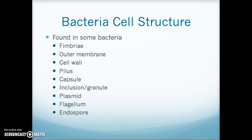In some bacteria you may find other appendages or parts, but know that they're not found in every bacterial cell. These include fimbriae, which are a type of hair-like feature; outer membranes; cell walls — and some bacteria do not have a cell wall, which is how we differentiate them; a pilus; a capsule; inclusions or granules; a plasmid, which is another way of carrying genetic material; a flagellum used for motility and movement; and sometimes bacteria can form endospores, which allow them to survive very harsh conditions.